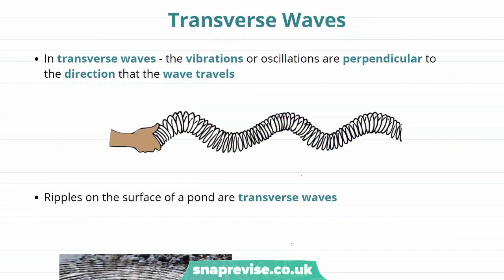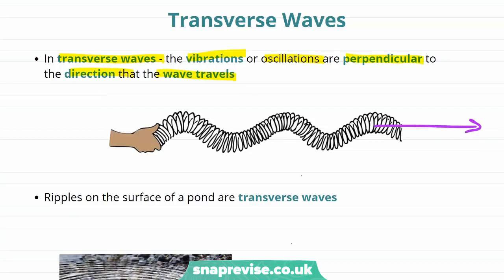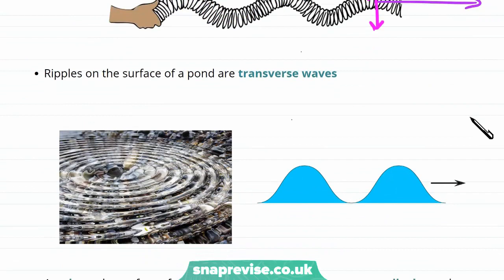So let's look at some more examples of transverse waves. In transverse waves the vibrations or oscillations are perpendicular to the direction that the wave is traveling in — the wave travels like this, but each part of the medium moves like this. One example we saw in a previous video: ripples on the surface of a pond are transverse waves. We drop a pebble in the pond and this causes ripples to spread out across it.